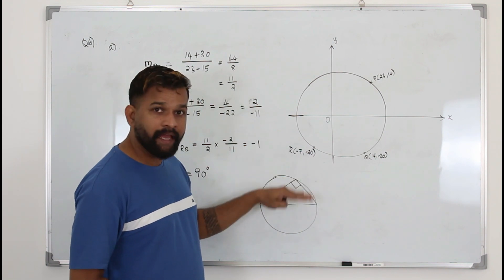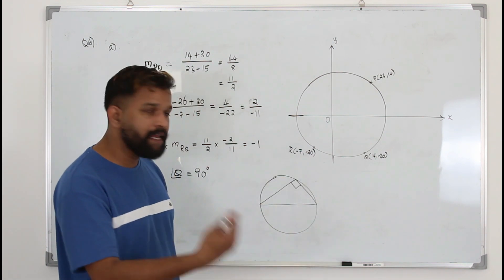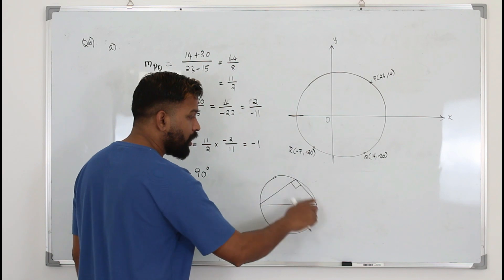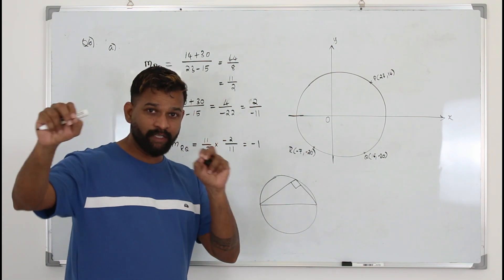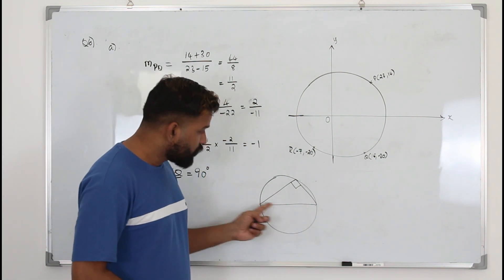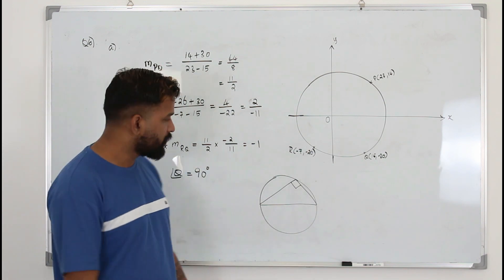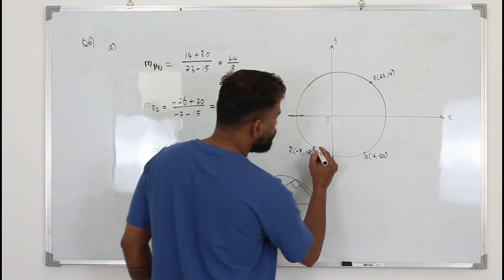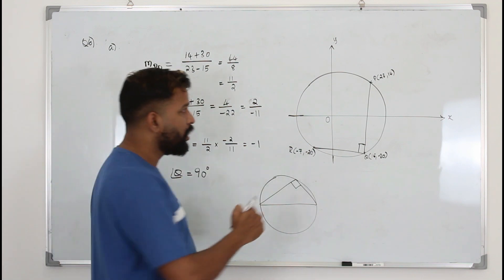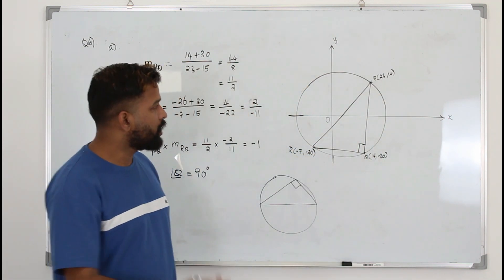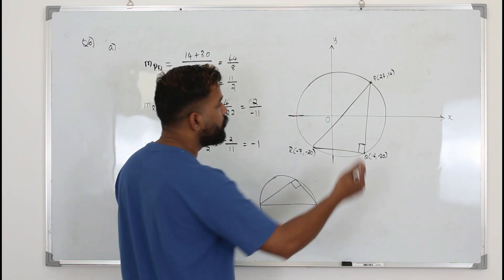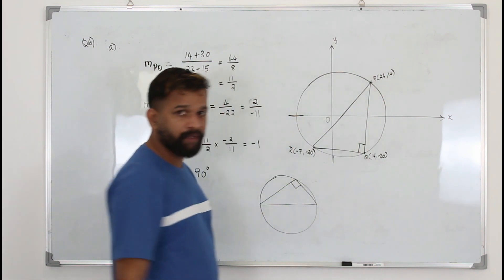This is the angle-in-a-semicircle theorem from IGCSE. In P2, it's rephrased as: if you draw a right angle triangle within a circle such that the vertices touch the circumference, the hypotenuse equals the diameter. Here, angle Q is 90 degrees, so the side opposite to it — RP — is the hypotenuse and therefore the diameter of the circle.